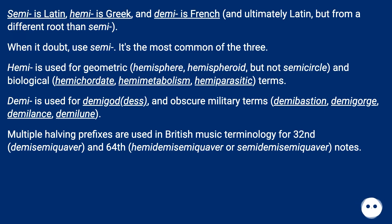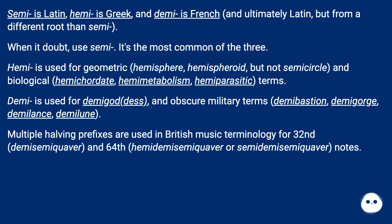Hemi is used for geometric terms — hemisphere, hemispheroid, but not semicircle — and biological terms: hemichordate, hemimetabolism, hemiparasitic. Demi is used for demigod and obscure military terms: demibastion, demigorge, demilance, demilune.